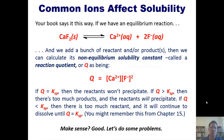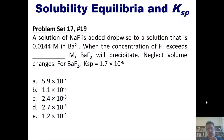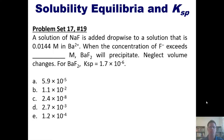Let's do some problems. A solution of sodium fluoride is added dropwise to a solution that is 0.0144 molar in barium cation. When the concentration of fluoride exceeds a certain molar value, barium fluoride will precipitate — please neglect volume changes. The Ksp for barium fluoride is given. You're welcome to attempt this on your own, then click the link to a separate video where I work through it on the board.